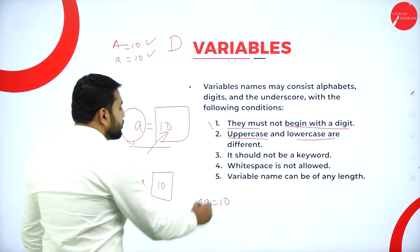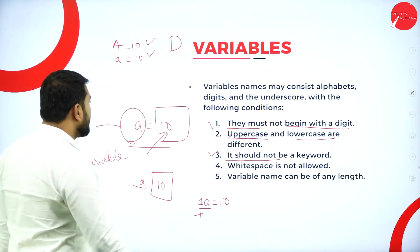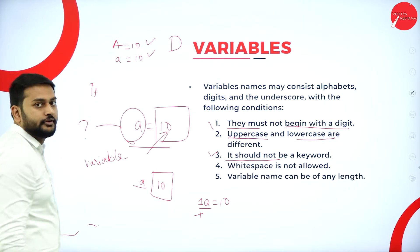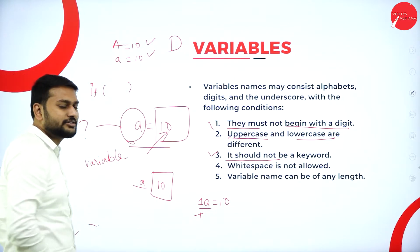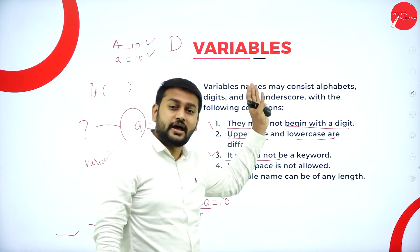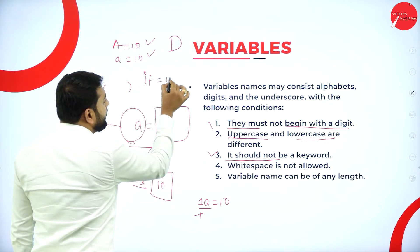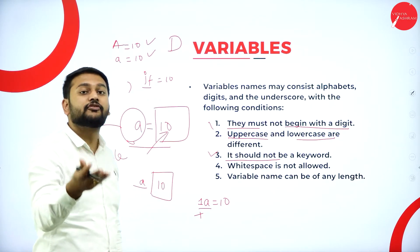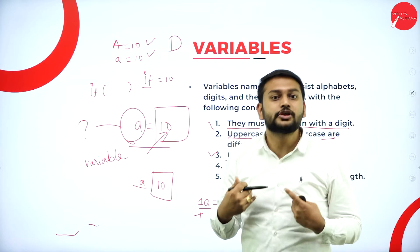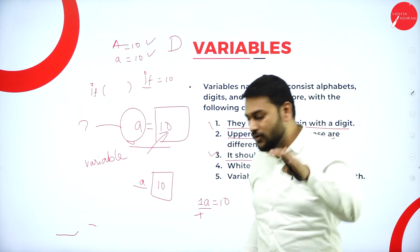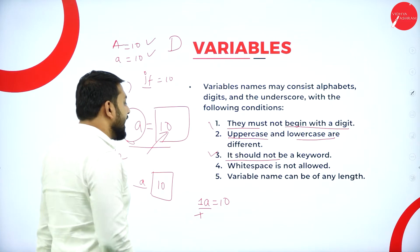The third rule: the variable name should not be a keyword. For example, 'if' is a predefined reserved word used to check a condition. Writing if = 10 is not valid because 'if' is a keyword — a reserved word — and you are not supposed to use it as a variable name.